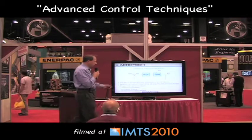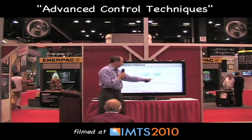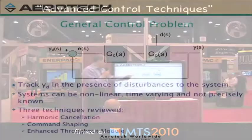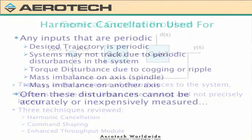I'm sure we're all familiar with the general control problem, just to set the stage. I have some controller, I have a plant, I have an output that I'm interested in controlling, and in the presence of some disturbances, I need to track some signal Y as closely as I possibly can. I'm going to show you three techniques: harmonic cancellation, command shaping, and an enhanced throughput module.